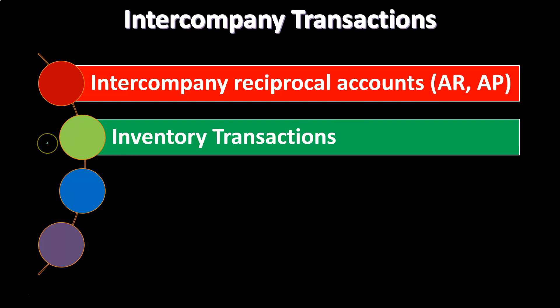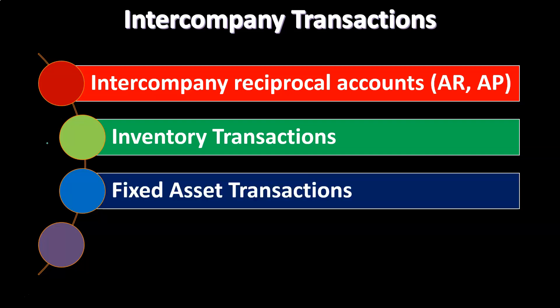With inventory transactions, we could try to group together the effect of the inventory going from a parent to the subsidiary or subsidiary to the parent, and then think about how we're going to reverse those. That's going to be more complicated, because you have to think about whether or not the inventory is still on the books of the parent or subsidiary, whether or not it was sold, and the case of markups that could happen with them. So we'll think about that later.